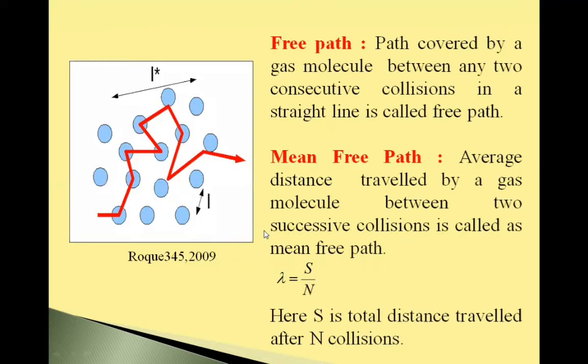See this diagram. In the diagram, these blue circles are gas molecules. Suppose here one molecule collides with this molecule. And after colliding, the molecule gets changed direction and goes to this molecule. Again here, collision takes place.